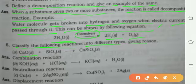Classify the following reactions into different types, giving reasons. (a) CaO + SiO2 solid → CaSiO3. This is a combination reaction.